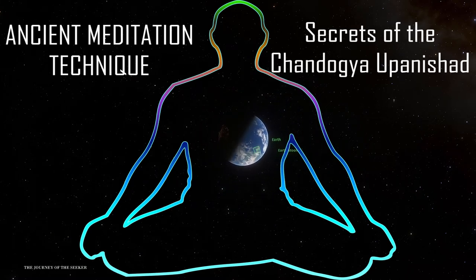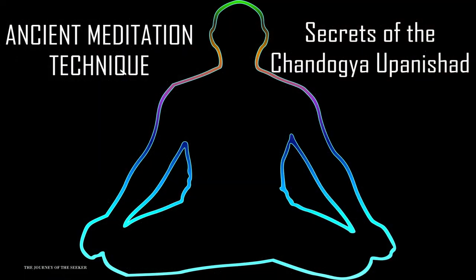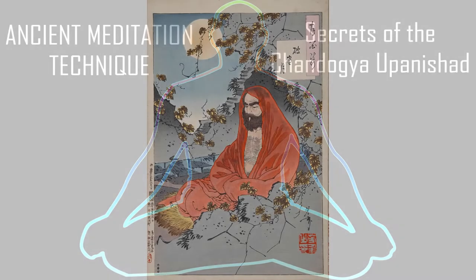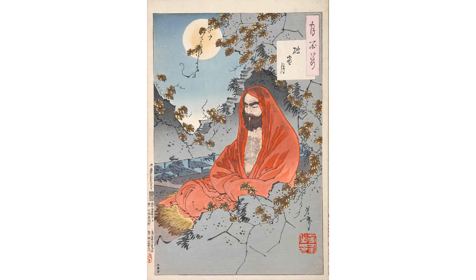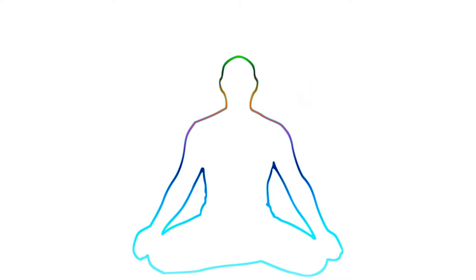Today I want to talk about an ancient Vedantic meditation technique. For most of us, whenever we sit down to meditate, thoughts come rushing into our head. We all have regular lives to lead, unlike renunciates who can move away from the material world and dedicate themselves to contemplating on the nature of reality. The rest of us have thoughts that are a result of the daily grind — people, relationships, events, material objects and so on. Many meditation techniques talk about focusing on the breath and emptying our mind, but this is quite hard to do.